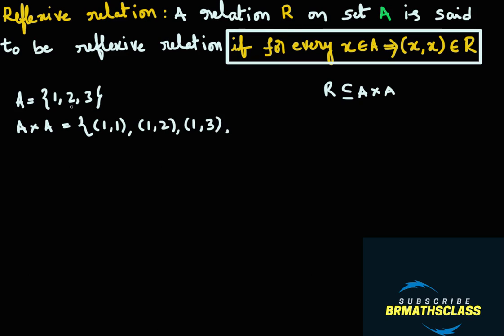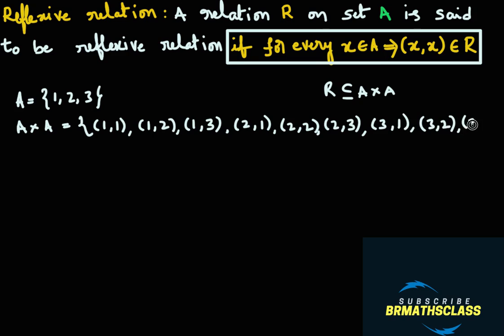You take the second element in set A and pair it with all elements of set A. So you get ordered pairs (2,1), (2,2), (2,3). Then you take the third element in set A and pair it with all elements of set A: ordered pairs (3,1), (3,2), (3,3). This is A cross A.